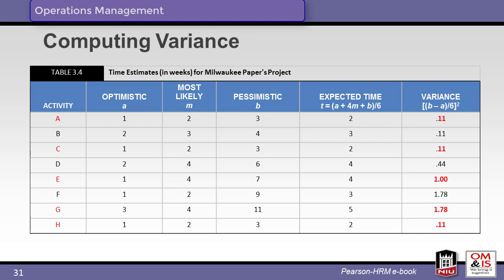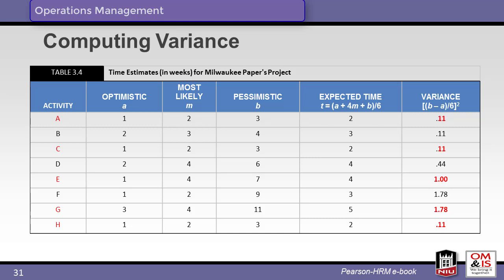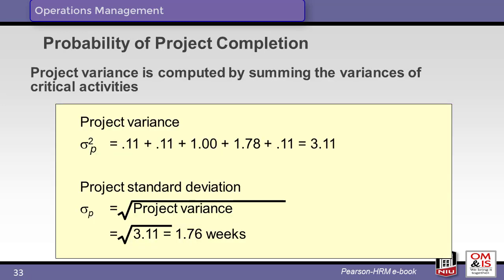Returning to our example from Milwaukee paper, we have defined optimistic, most likely, and pessimistic activity times. You see the calculated expected time and variance for the eight activities. We continue to use red font to highlight activities on the critical path. The overall variance of the project is calculated by summing the variances of the activities on the critical path. Referring to the activity variance previously calculated, we calculate the project variance as 3.11 weeks. Since the standard deviation of the project is the square root of the variance, the overall standard deviation of the project is 1.76 weeks.